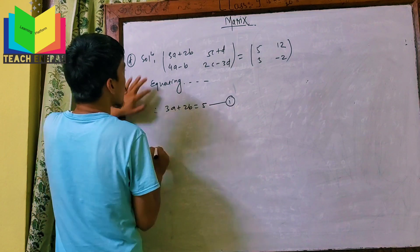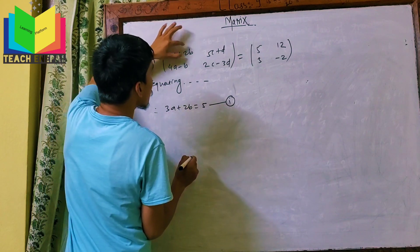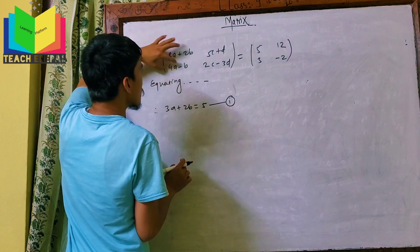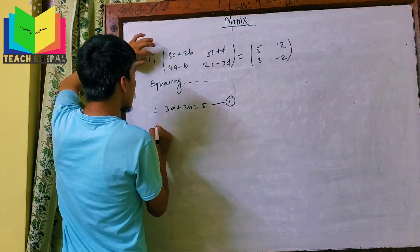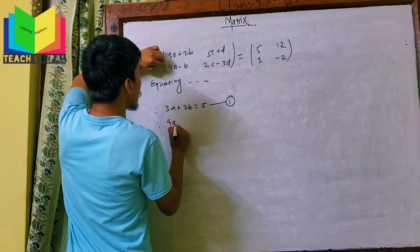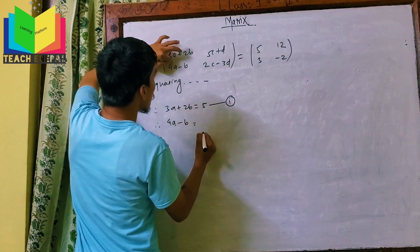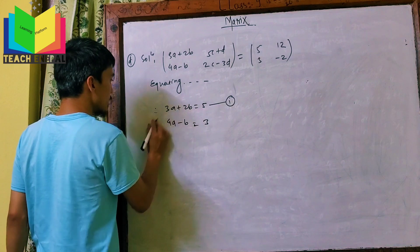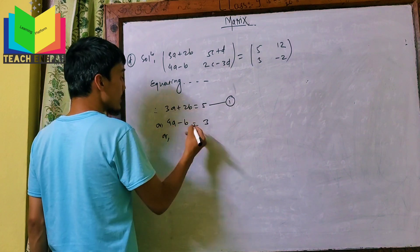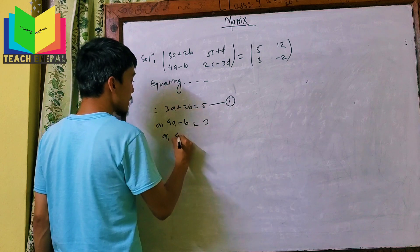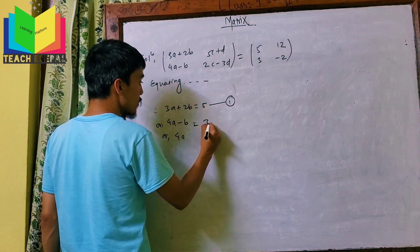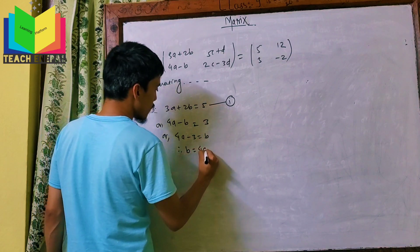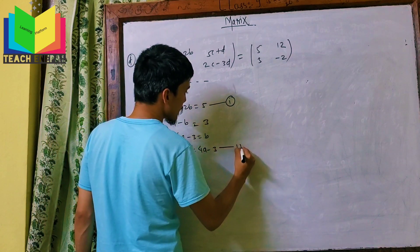From 4a-b equals some value, we get b equals 4a minus 3. Let's call this equation 2.